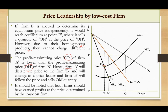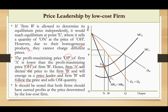Firm A will dictate the price because its price is lower than firm B's price. Firm A emerges as the price leader and firm B will be the follower — it will follow the price and sell OM quantity. It should be noted that both firms earn profits at the price determined by the low cost firm. This is how price and output are determined under price leadership by the low cost firm.